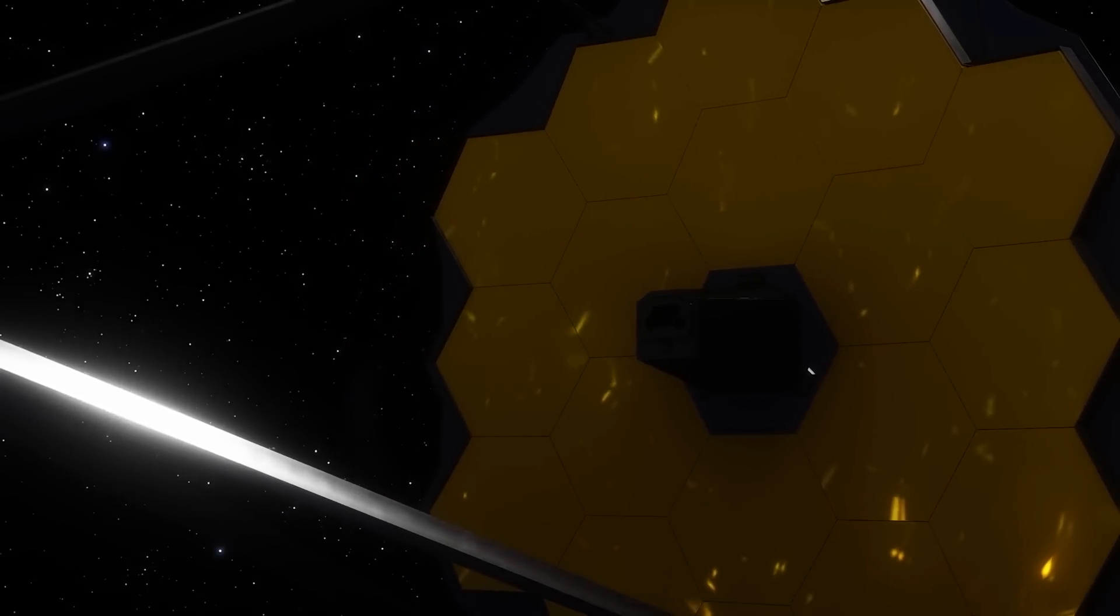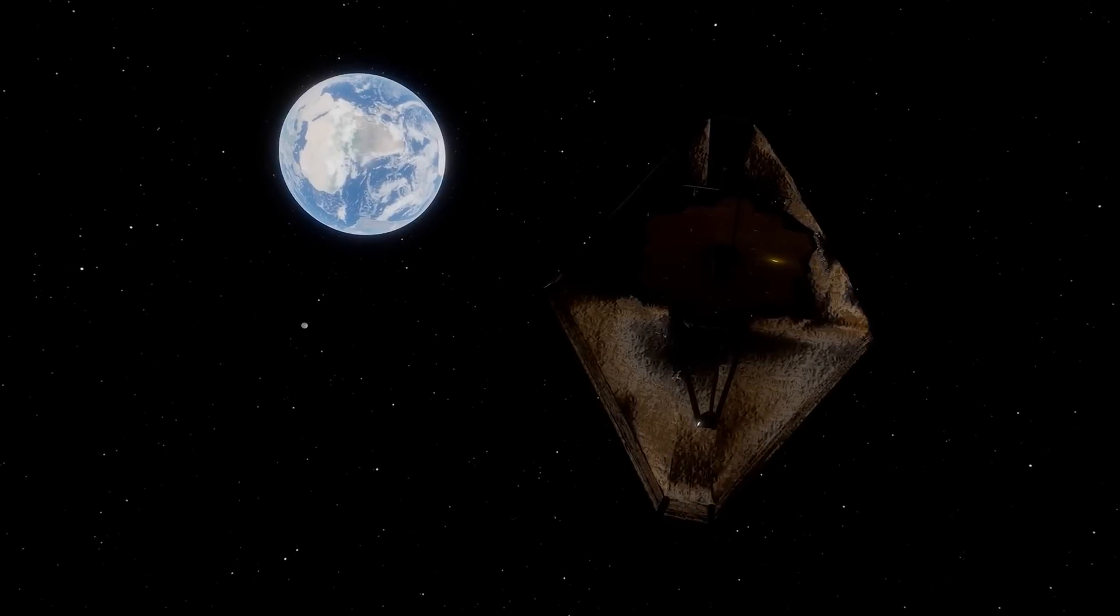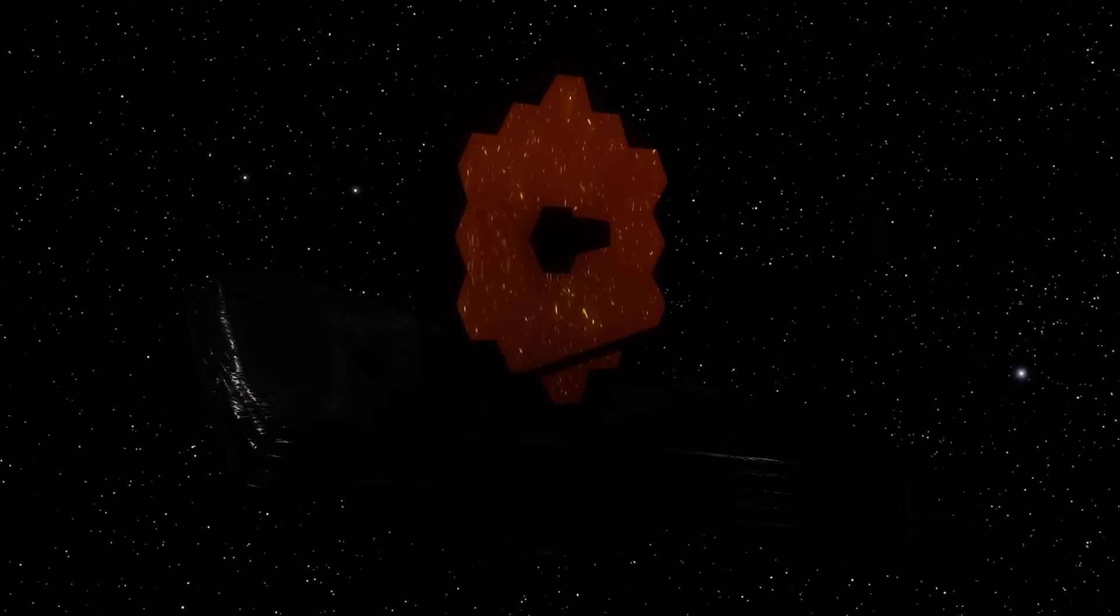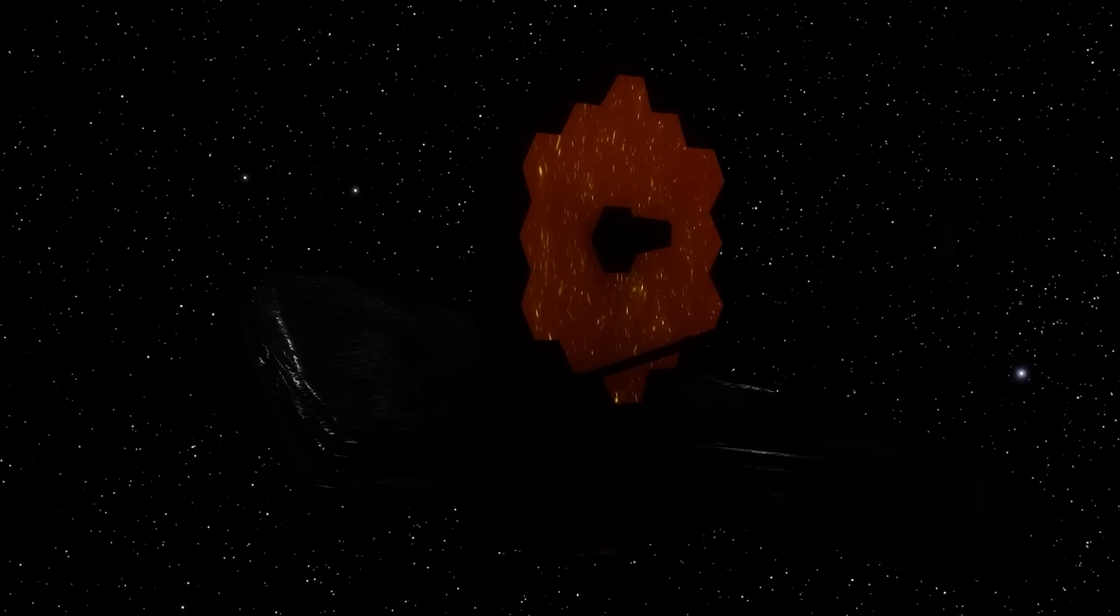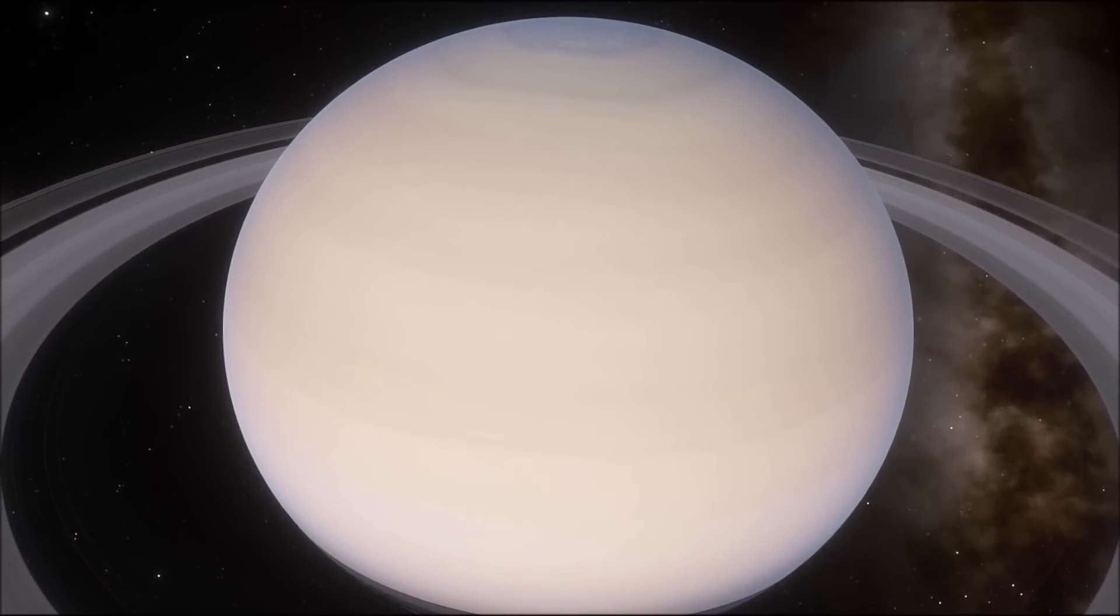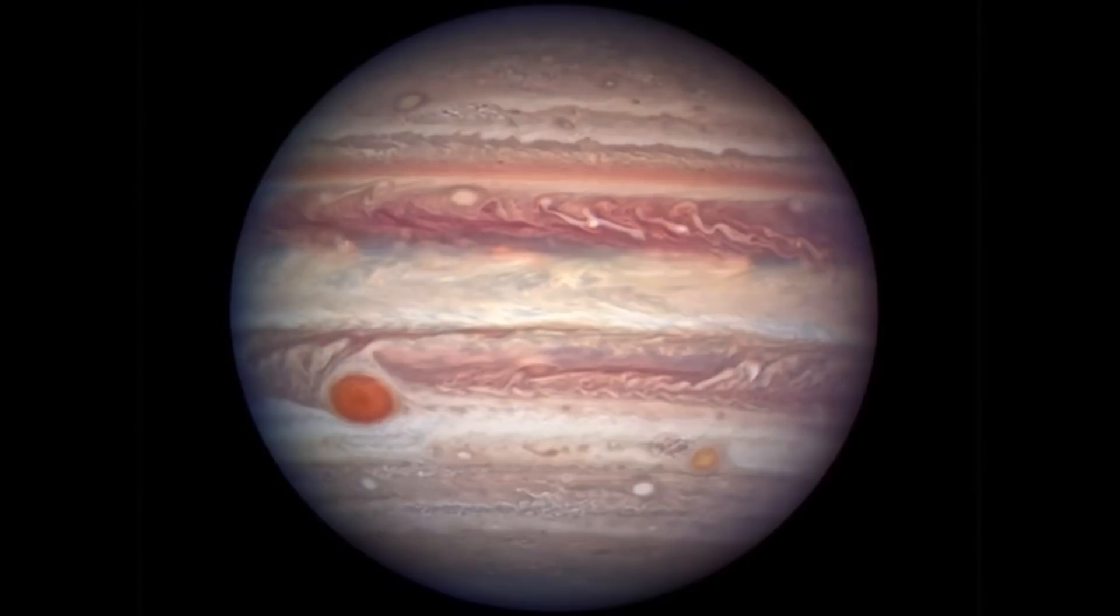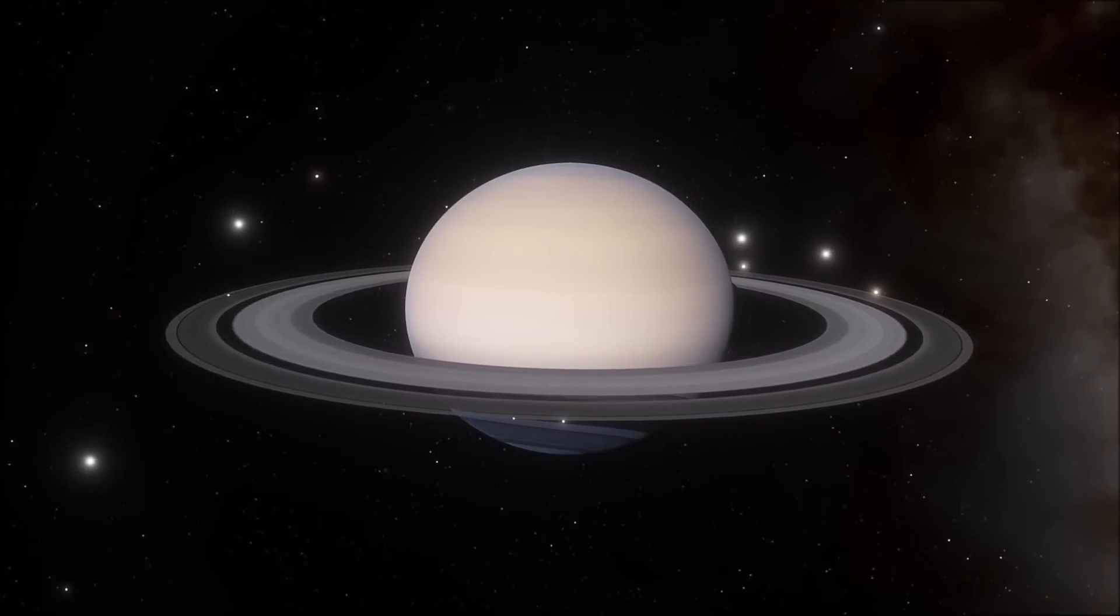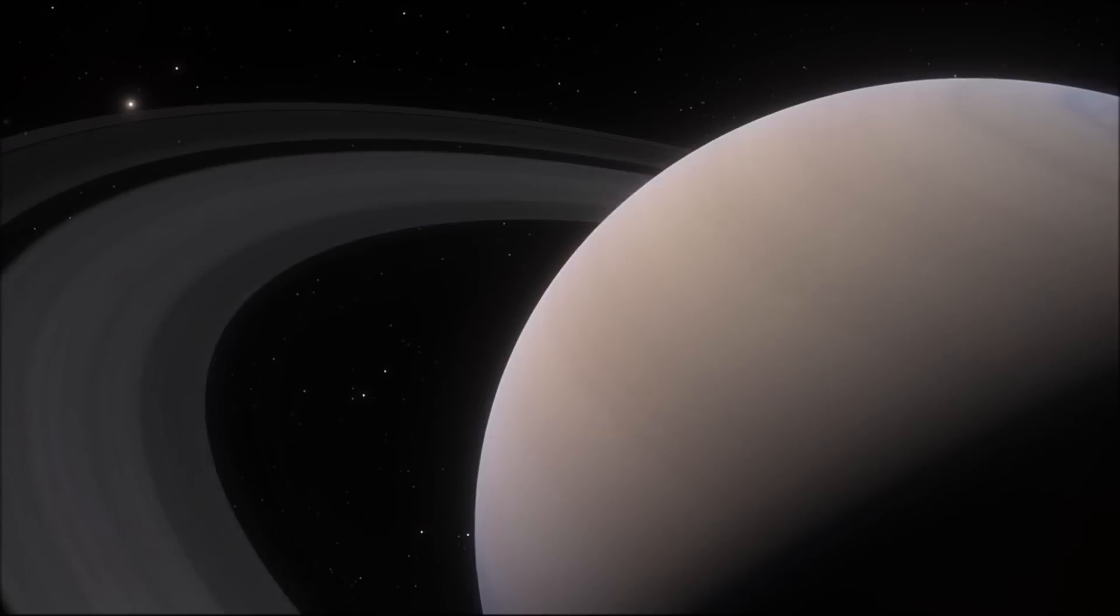The James Webb Space Telescope, the JWST, is the most advanced telescope ever built, being 100 times more powerful than its predecessor. With its help, we will be able to unlock the secrets of the vast expanses of the universe. In the past, we have discovered a wide variety of planets, from small rocky worlds to gas giants larger than Jupiter, as well as extremely hot planets and habitable ones.